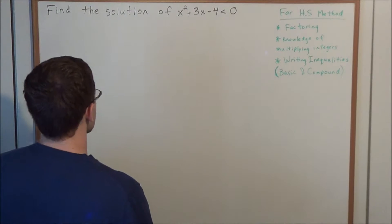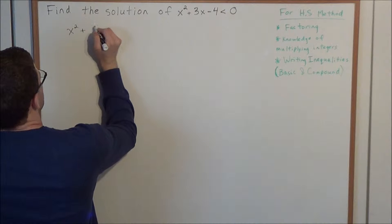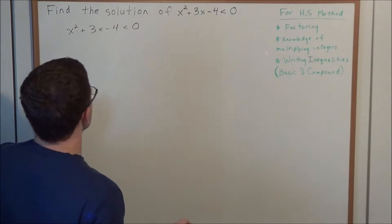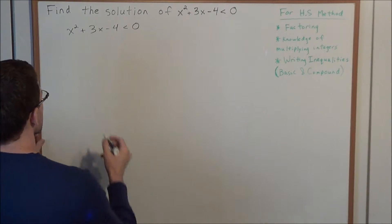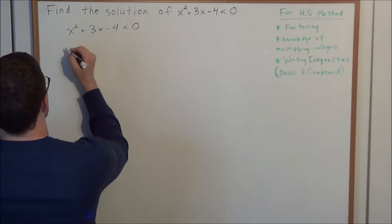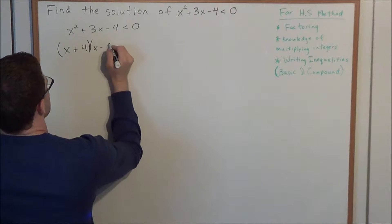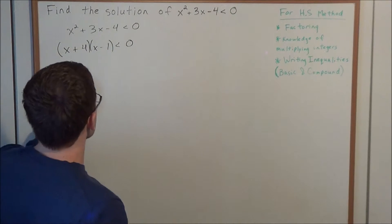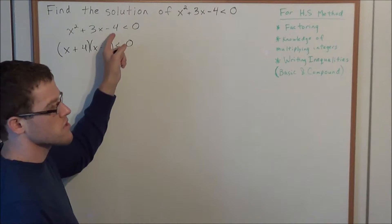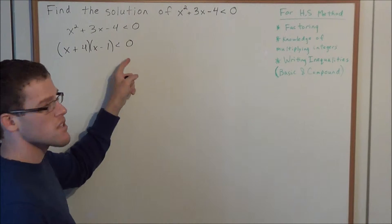So let's go ahead and get started. We're looking at the inequality x squared plus 3x minus 4 is less than zero. Now what we need to do is factor this into two binomials. We need to ask ourselves what two numbers will sum to a positive 3 and multiply to a negative 4. This would be x plus 4 times x minus 1 is less than zero. We can quickly check: 4 minus 1 is positive 3, and 4 times negative 1 is negative 4.